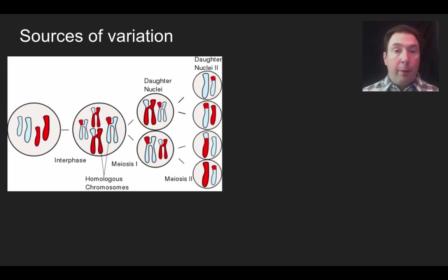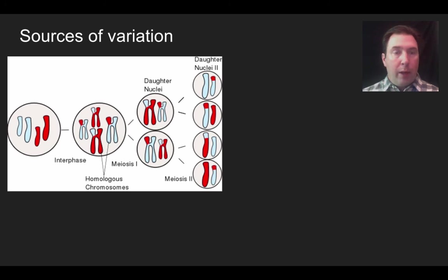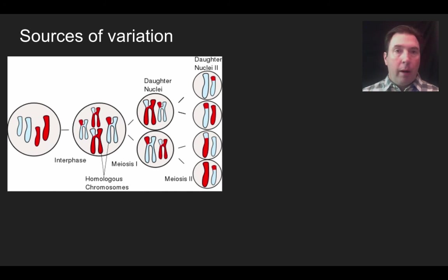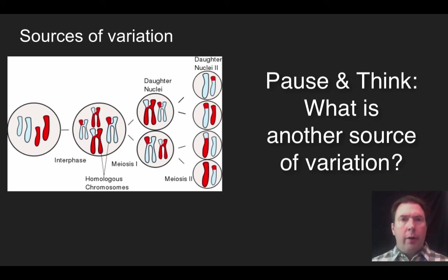The third source is that meiosis produces four genetically unique daughter cells, and during reproduction only one of these four will merge with a daughter cell from another individual. So there is a random combination of which gametes come from which parent, adding another layer of variation. These are all three sources of variation generated through meiosis. But there's actually another form of variation we haven't talked about yet — pause and think: what else could increase variation beyond chromosome assortment, crossing over, and random gamete selection?